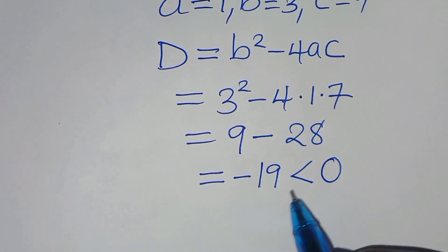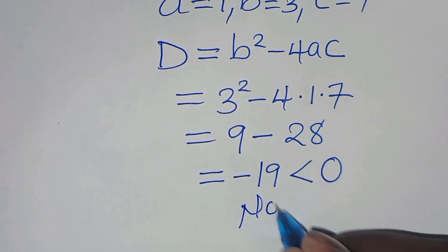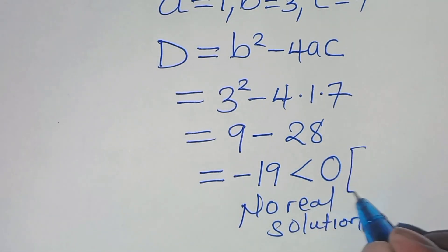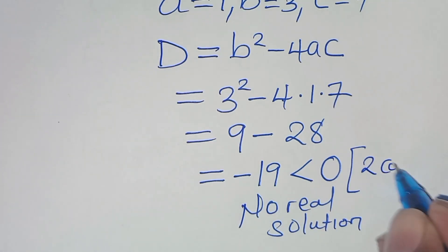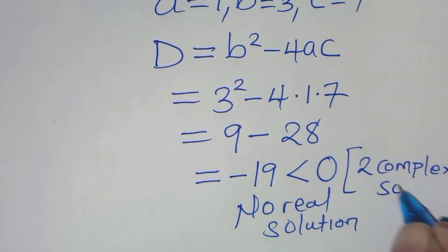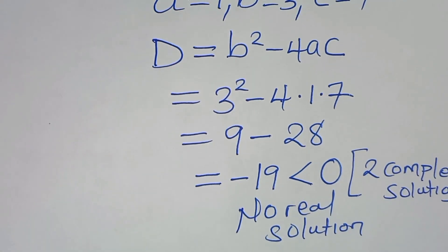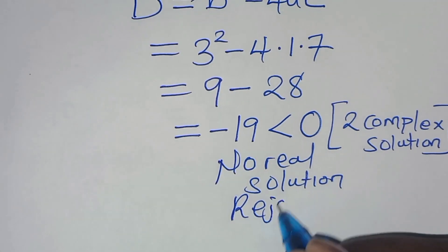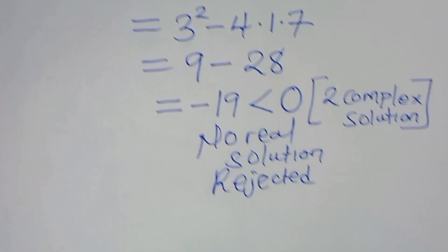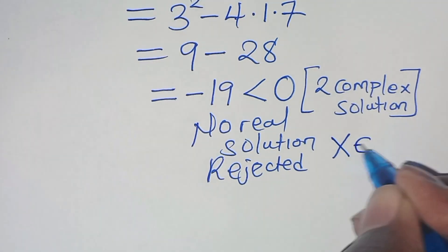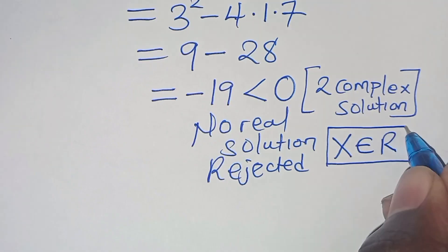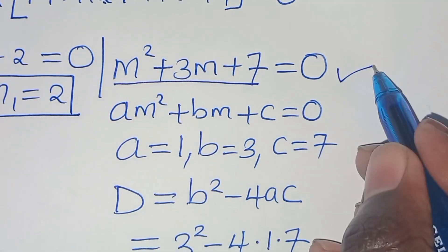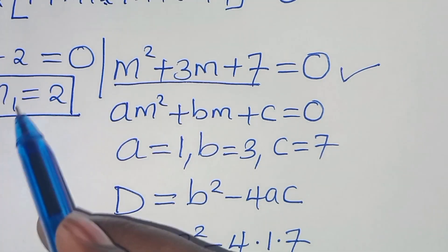The discriminant is negative 19, which is less than 0. This means there is no real solution from the quadratic part — we have two complex solutions. So this quadratic part is rejected, since x is a member of the real numbers.